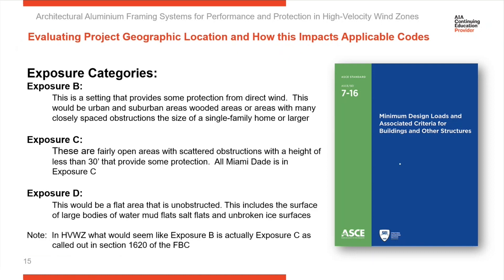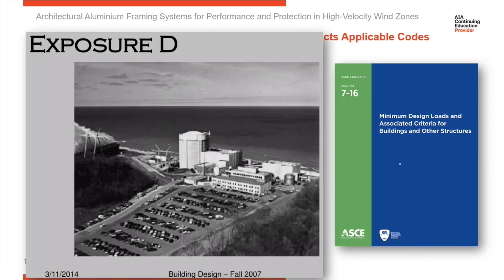Moving on to Exposure D — this would be an area with a flat surface that is open and provides no obstructions from blocking the wind. This would be adjacent to large bodies of water, open mud flats, salt flats, unbroken ice, frozen surfaces, or right on the coast with wind blowing directly in off the ocean with no protection hitting the facility. So you've got those three different exposure levels.